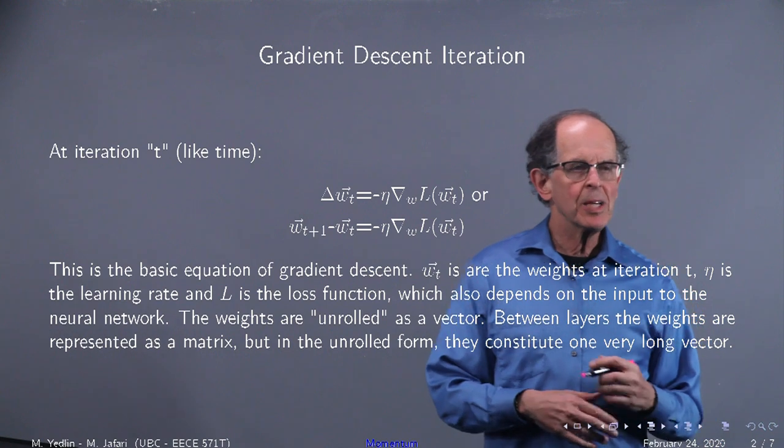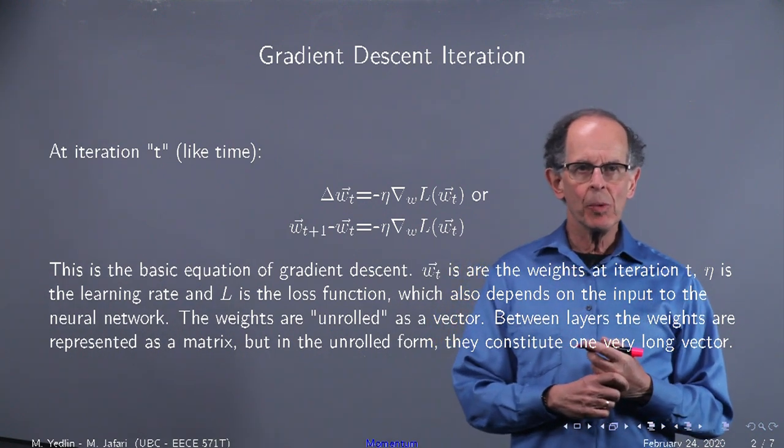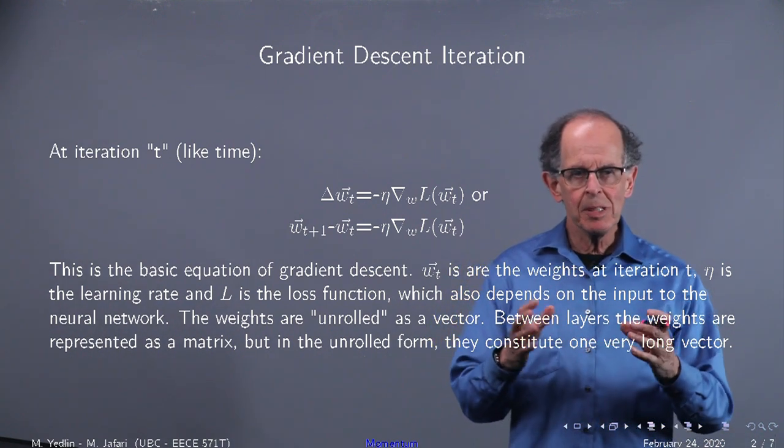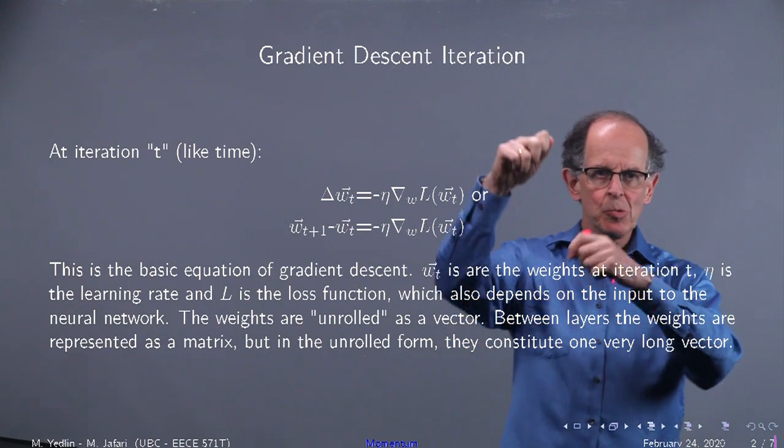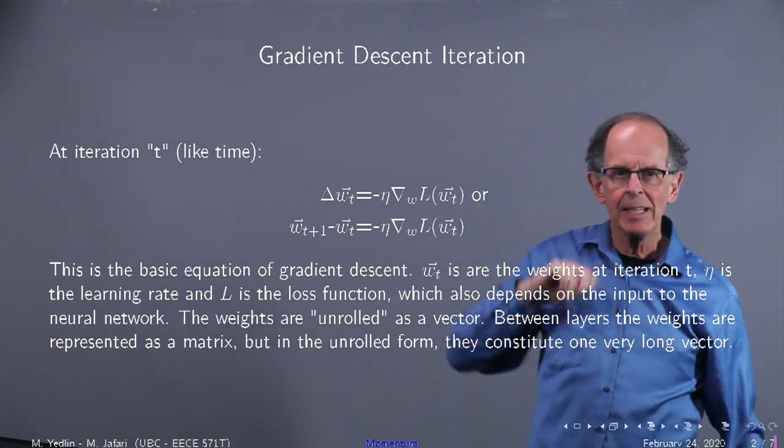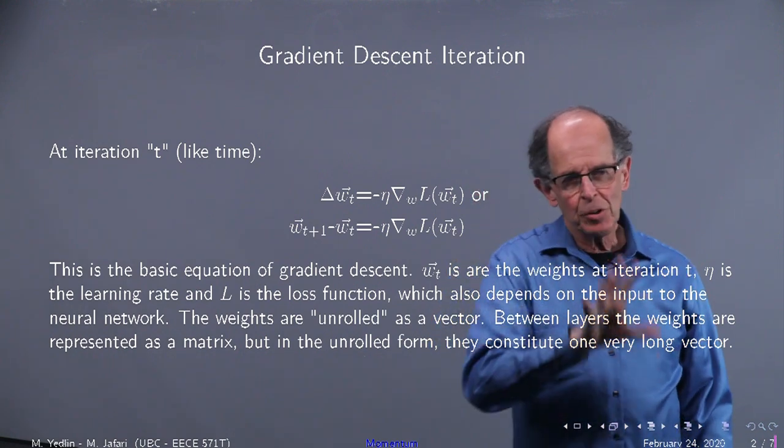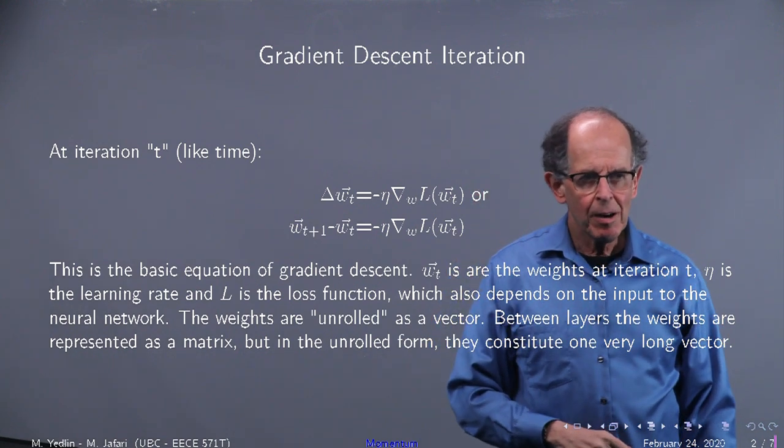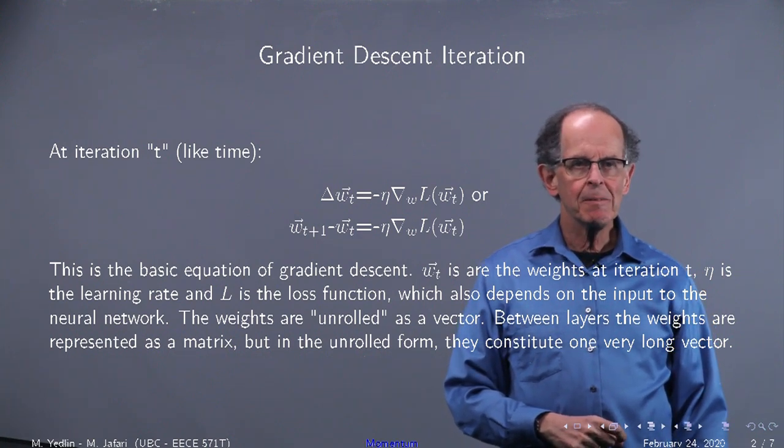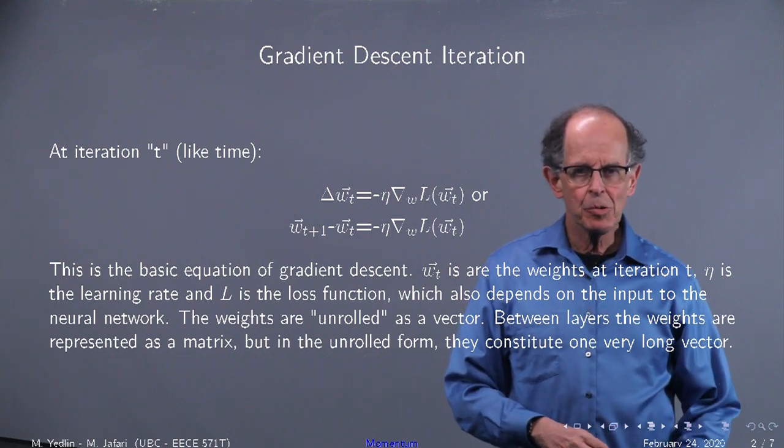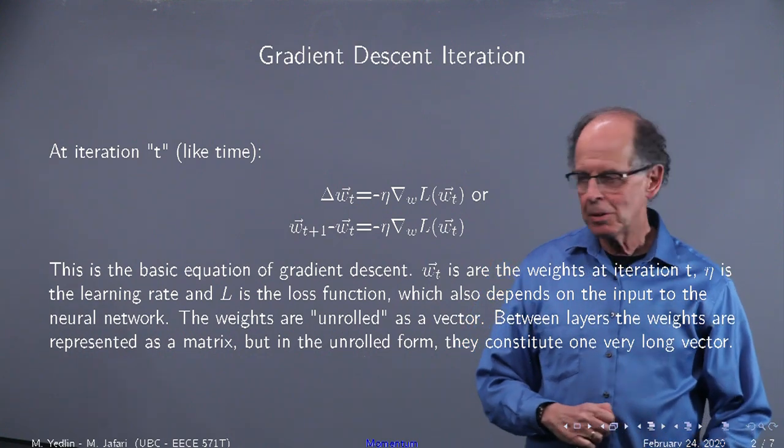And what we've done is we've unrolled the weight vector w. Normally between layers, it's a matrix. For all the matrices, we unroll it as one gigantic long vector. And you'll have a big giant matrix of w's as a vector. And now we take the gradient in that multi-dimensional space with respect to w.